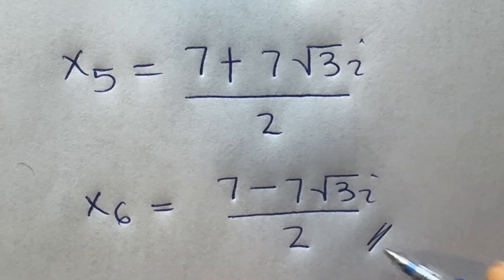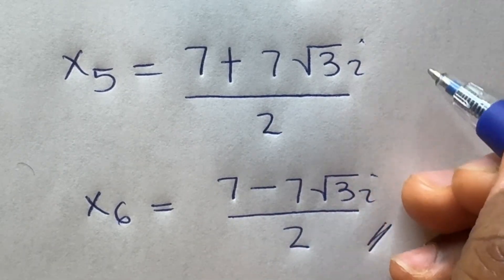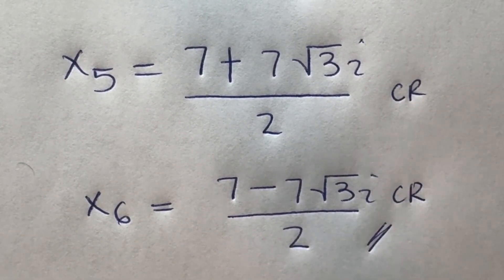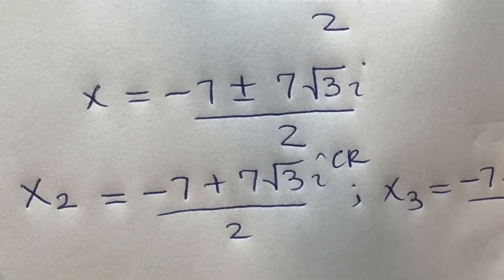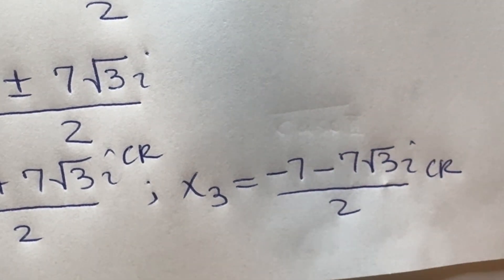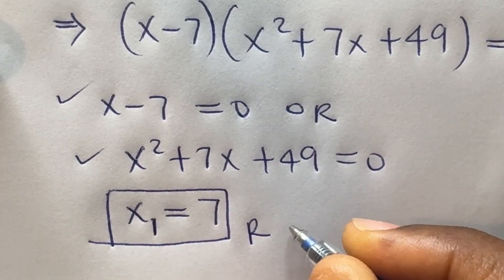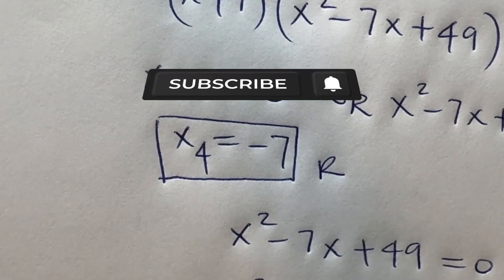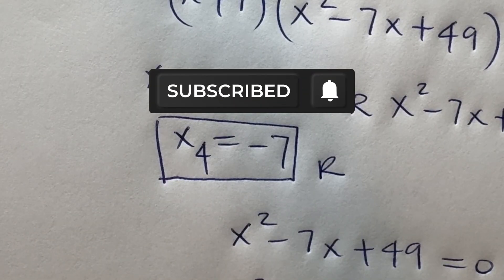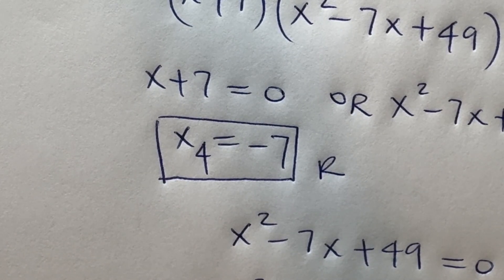So this is how to solve this problem to get all six solutions. We got two real solutions — x₁ equals 7 and x₄ equals negative 7 — and four complex roots: x₂, x₃, x₅, and x₆. If you have enjoyed this video please hit the like button, remember to subscribe to my channel, and share with others so they can also benefit from these steps. Thanks for watching!